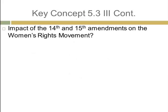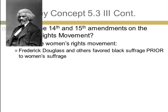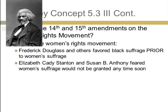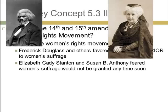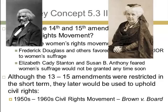What was the impact of the 14th and 15th Amendments on the women's rights movement? Essentially, it divided the movement. On one side, Frederick Douglass and others favored Black suffrage prior to women's suffrage. On the other side, people like Elizabeth Cady Stanton and Susan B. Anthony would not support it because they feared that women's suffrage would not be granted anytime soon. Although the 13th through 15th Amendments were restricted in the short term, they would later be used to uphold civil rights — especially in the 1950s and 60s civil rights movement and in the court case Brown versus the Board of Education.